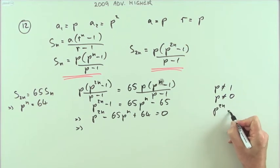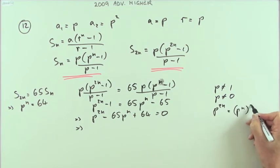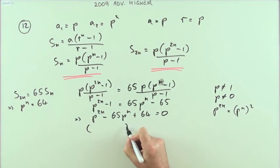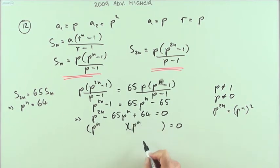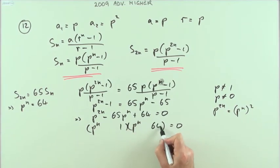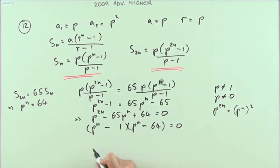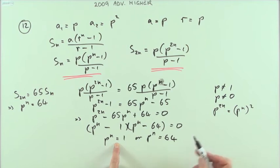I've got a numerical term, a term in p^n, and a term in p^n squared. So I've got a pair of brackets equal to zero. Factors of 64 that add up to 65 are 1 and 64. So either p^n is 1 or p^n is 64.